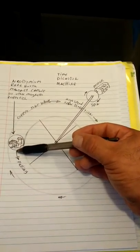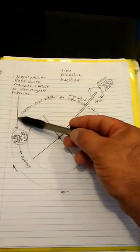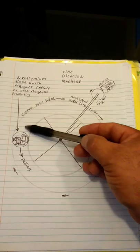As it falls by the earth's gravity falling downward, it produces a magnetic field around the capsule.